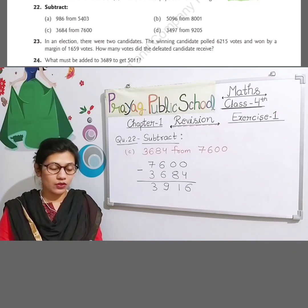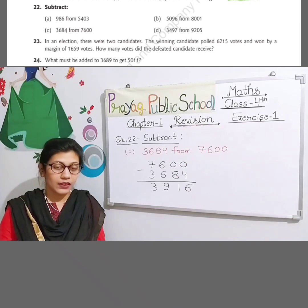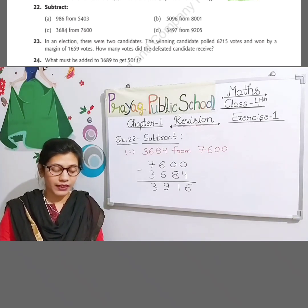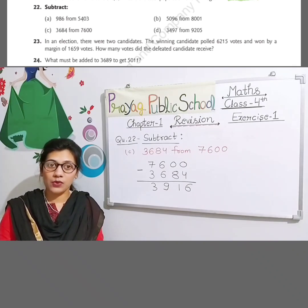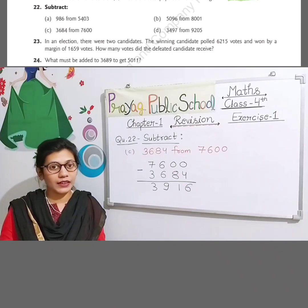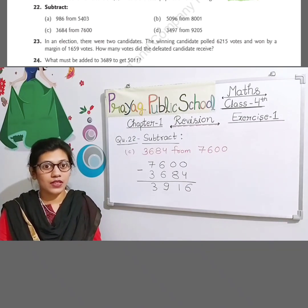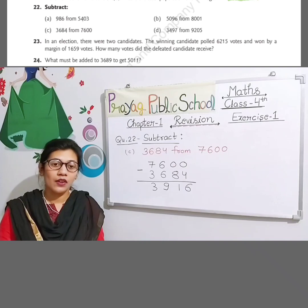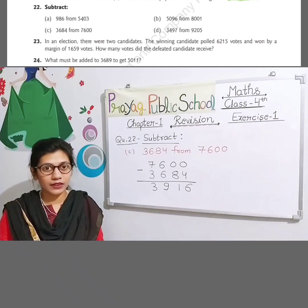Word problem Q24: What must be added to 3689 to get 5011? Iska matlab hai: ek number hai 3689, usme hum kya add karein ki humein 5011 mil jaaye. To 5011 mein se aap 3689 ko subtract kar denge — ghataa denge — to aapko pata chalega ki 3689 mein kitna add karke 5011 find out kar sakte hain. Aap subtraction ke process ko karenge: bade number mein se chhote number ko subtract kar denge.